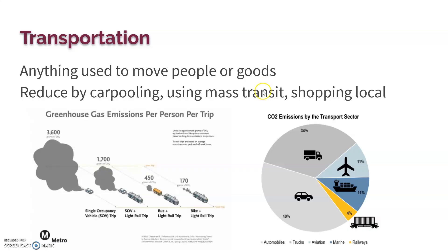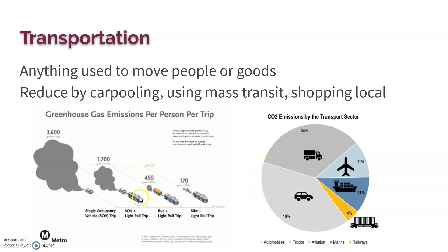In terms of causes, increased fossil fuel use is a major one. These come from transportation — cars, planes, and ships — anything we use to move ourselves or goods. We can reduce this by carpooling, using mass transit, and shopping local, since transporting goods from other places requires fossil fuels. Minimizing the distance food and goods travel reduces that source of carbon dioxide.